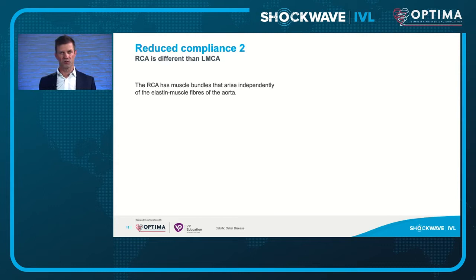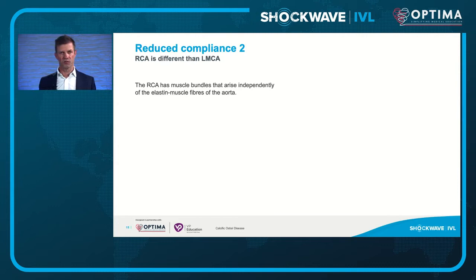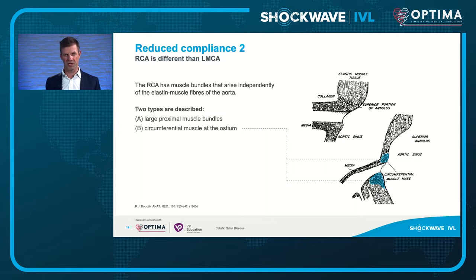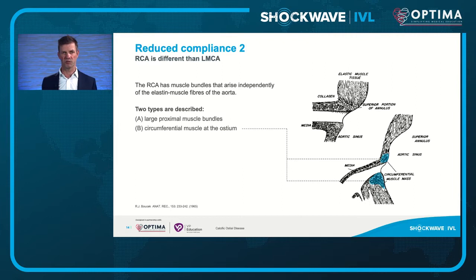The right coronary is different from the left, with two described types of muscle bundles: large proximal muscle bundles and a circumferential muscle bundle which arises independently from the elastic muscle fibers of the aorta. This is very different from the left main, where it tends to be a continuation of those muscle fibers. The right coronary ostium has much reduced compliance compared to the left main coronary ostium.